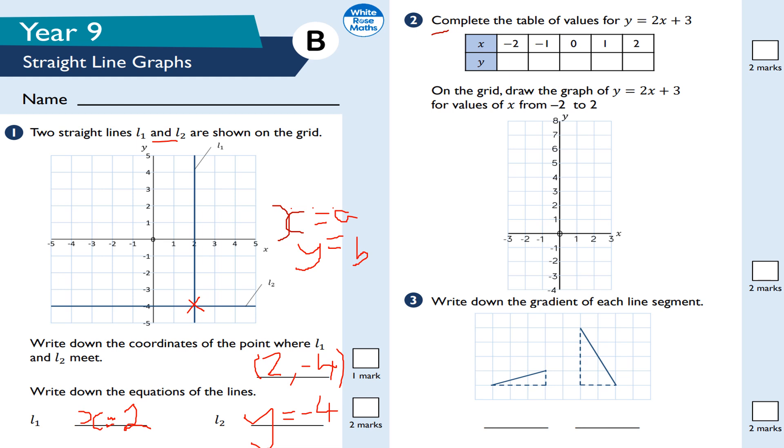Question number two, complete the table of values for y equals 2x plus 3. So we're going to sub in these values. So when x is 0, 2 times 0 is going to be 0 plus 3 is going to be 3. When x is 1, 2 times 1 is 2 plus 3 is going to be 5. There's going to be a good gap in 2s. That's going to be 7, that's going to be 1, that's going to be minus 1. Check it if you need to.